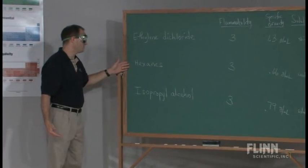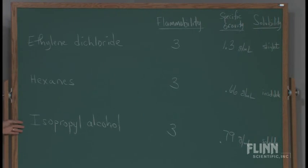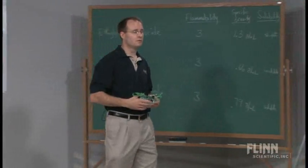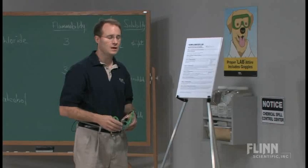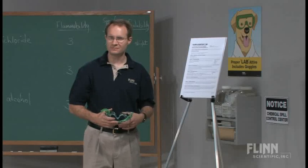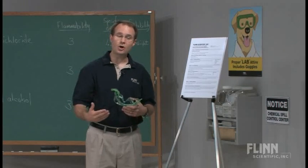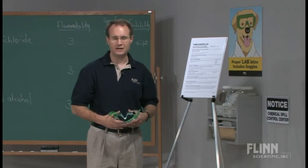One possible choice would be hexanes, and the other would be isopropyl alcohol. They are provided with a material safety data sheet for each of these three and told: determine the identity of the mystery chemical that the instructor added prior to the demonstration. Their job is to use all of the information contained on the material safety data sheet to solve the problem. It tends to be a very challenging process for the students, because there's a lot going on. That's all the information I'm going to share with them — they need to use the material safety data sheet to answer the question.